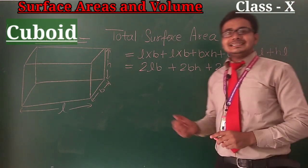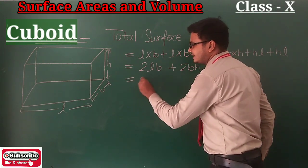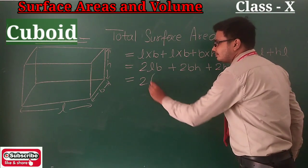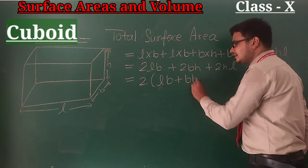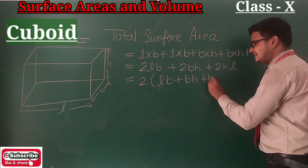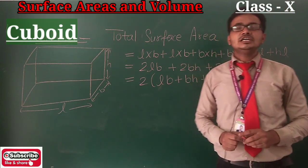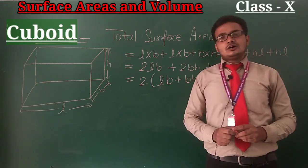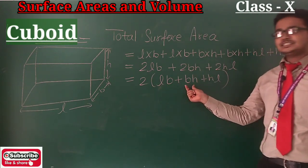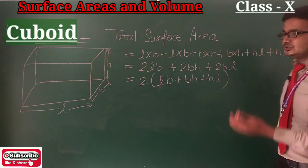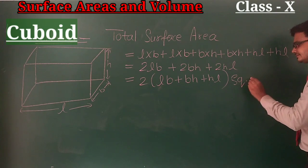Taking 2 as common, we get 2(LB + BH + HL). So this is the formula of Total Surface Area of a Cuboid: 2(LB + BH + HL). The unit is square units.